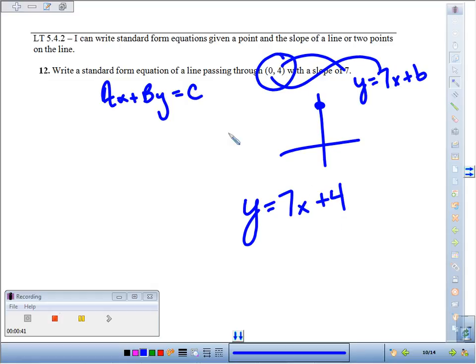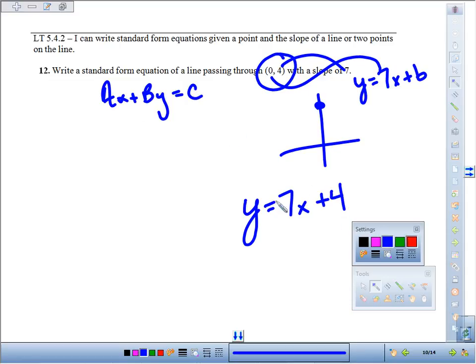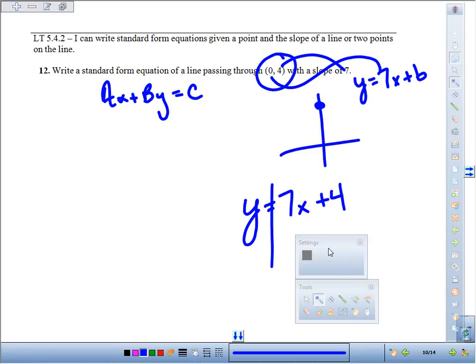But to be in standard form, we just have to fence post and get the variables on one side, numbers on the other. So really all we have to do is move the 7x over. To move 7x, we'll subtract 7x from both sides. Now it's off of that side.